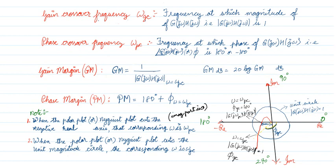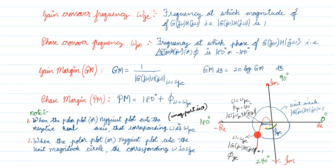Then this is the real axis, imaginary axis, negative real axis, and negative imaginary axis. Based on the angles: 0 degrees, 90, 180, 270, and back to 360 degrees. The red line is your polar plot. The point at which the polar plot cuts the unit circle — the corresponding frequency is the gain crossover frequency, where the magnitude is 1.